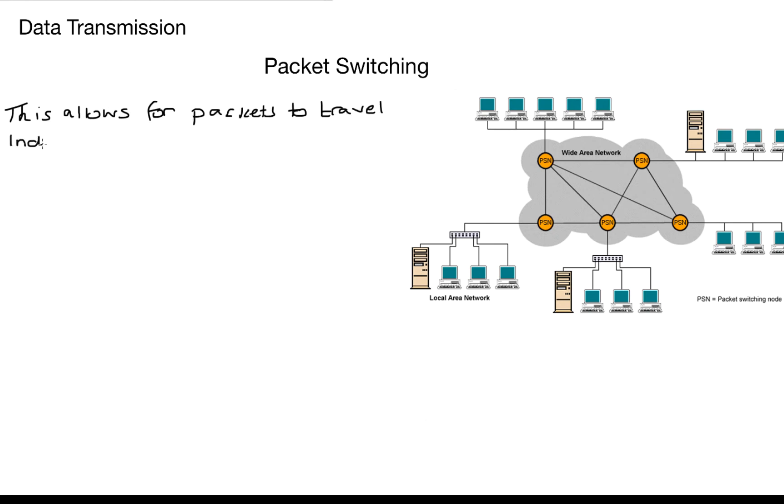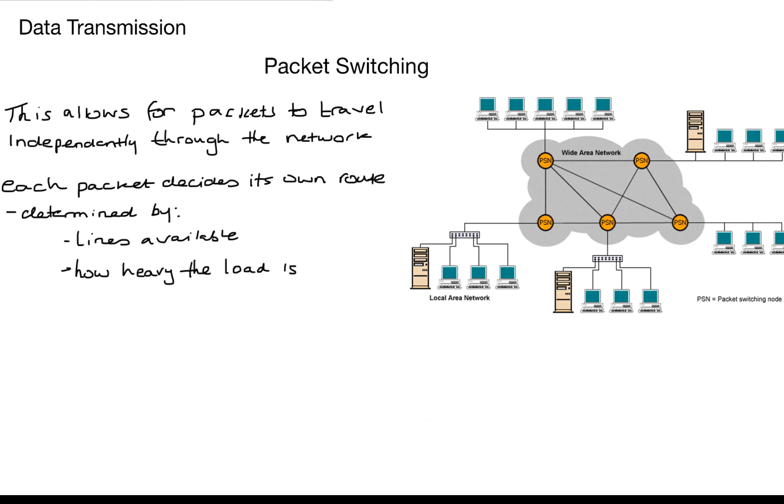But what about the other method, packet switching? Well these packets are very smart. This allows for packets to travel independently through the network and each packet decides its own route and it's determined by the line available on the network. So if the line is heavy or the traffic is busy then we will reroute in a different direction. Communication here is not broken if part of the network is unavailable. The packets will just reroute themselves.